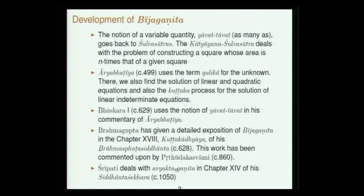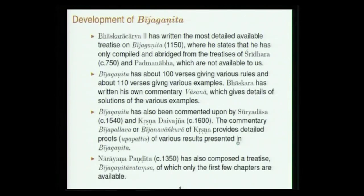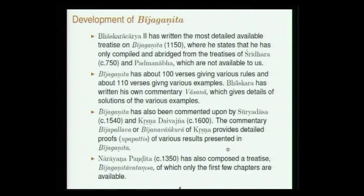A discussion of algebra appears in the work of Shripati written in 1050. But the most important work on Indian algebra available to us today is the Bijaganita of Bhaskaracharya II, written around 1150 when he was 34 years old. He says he compiled and abridged from well-known treatises of Sridhara and Padmanabha on Bijaganita, both of which are not available to us. Bijaganita is a small work of about 100 verses giving sutras and about 110 verses giving examples, with Bhaskara's Vasana commentary.